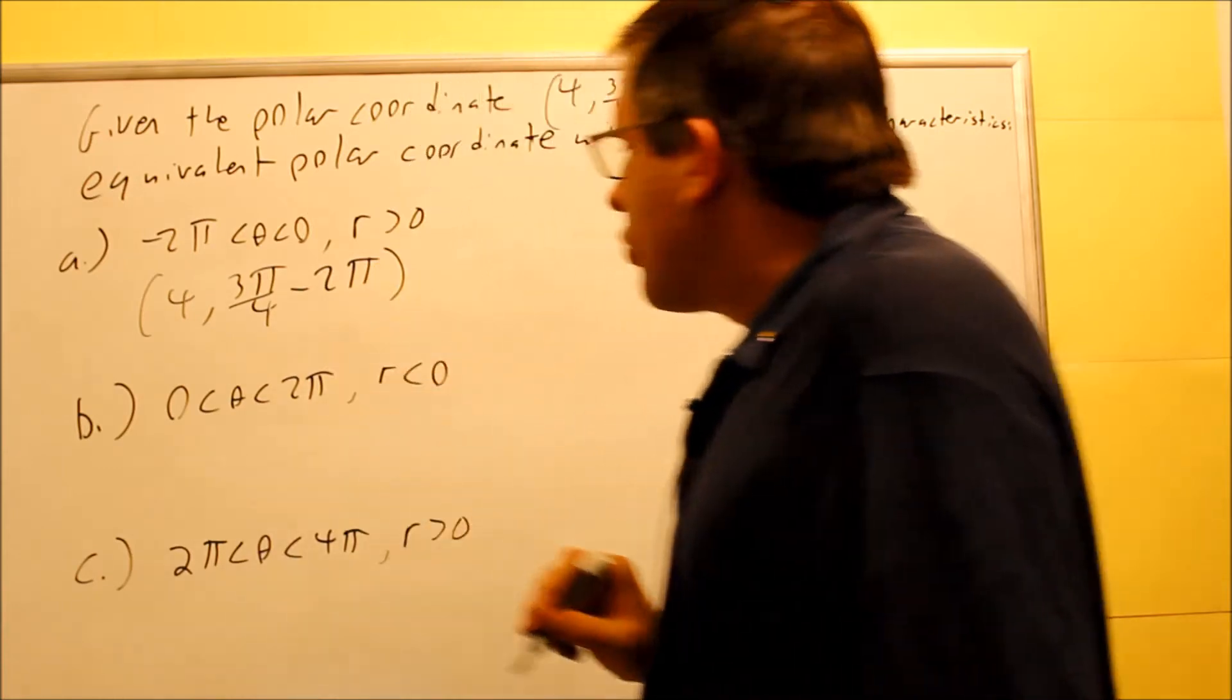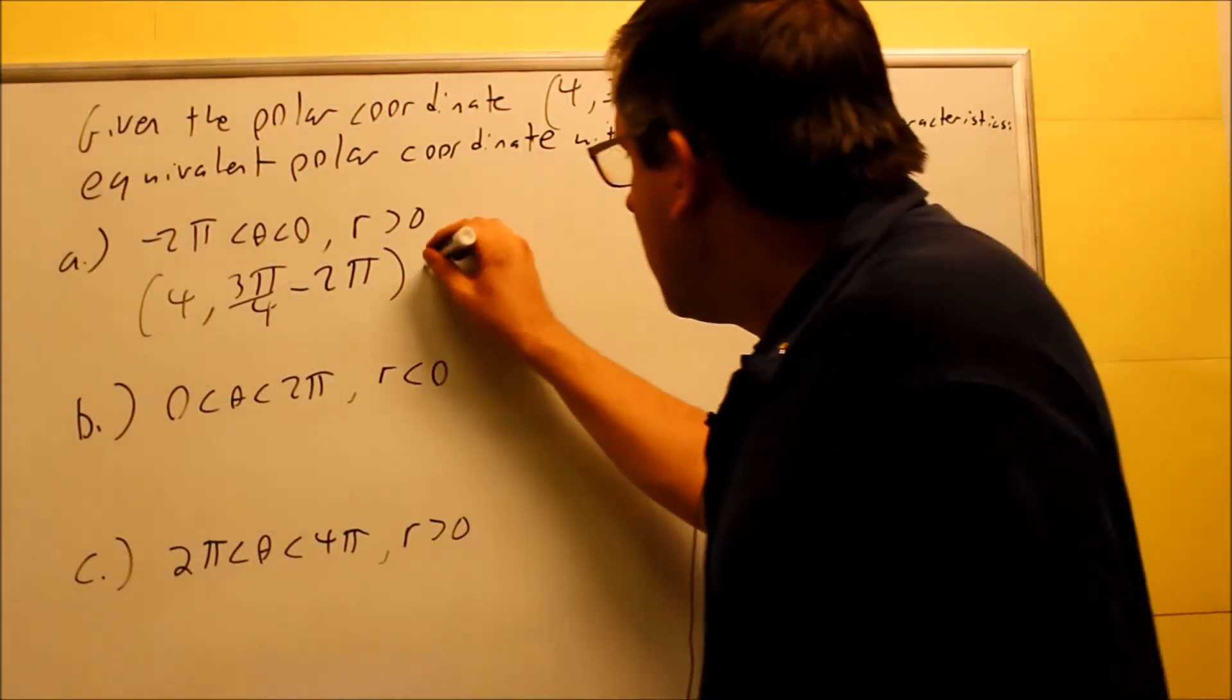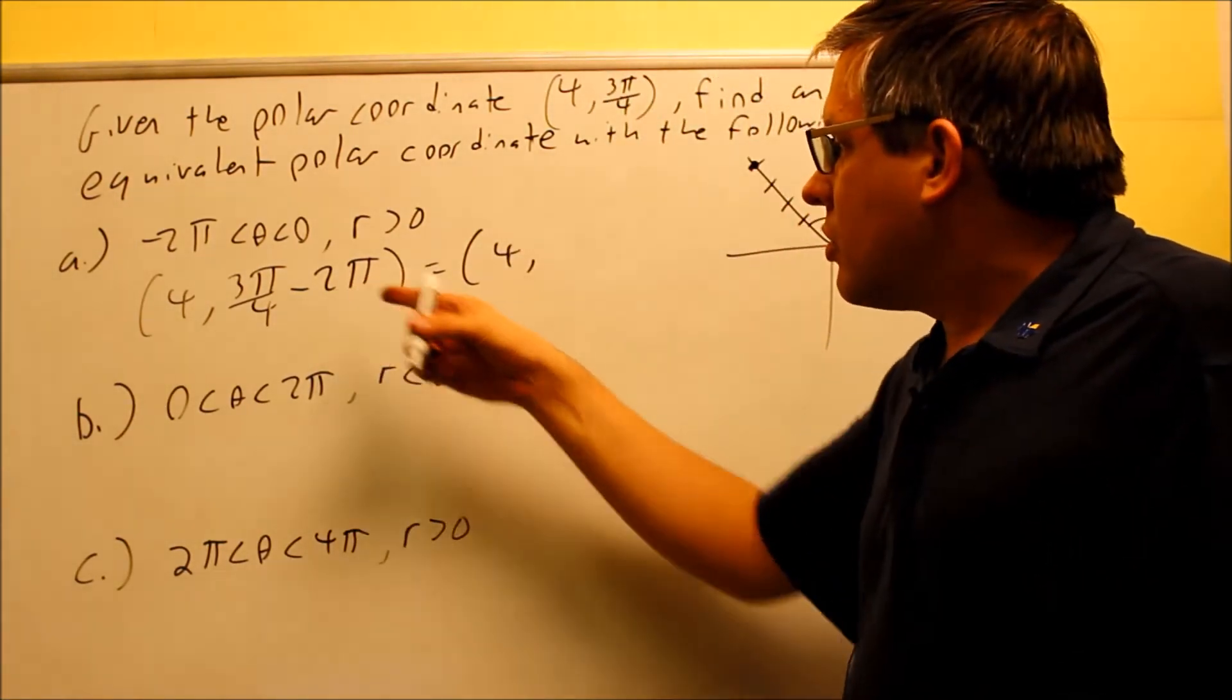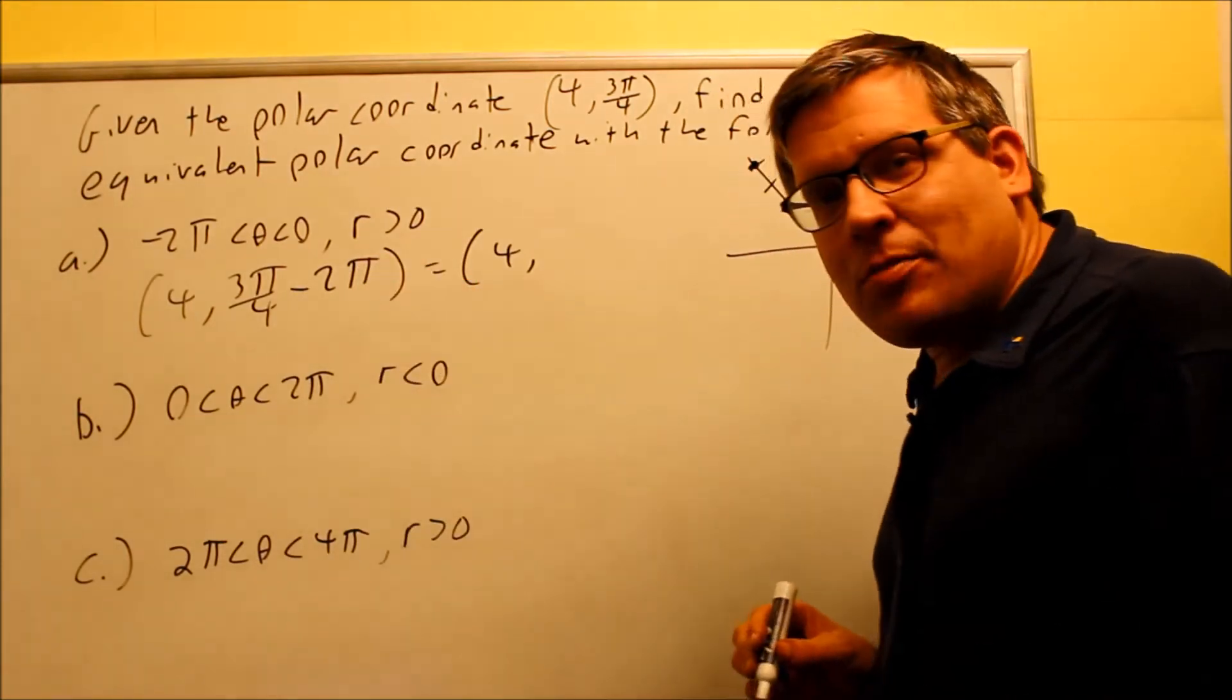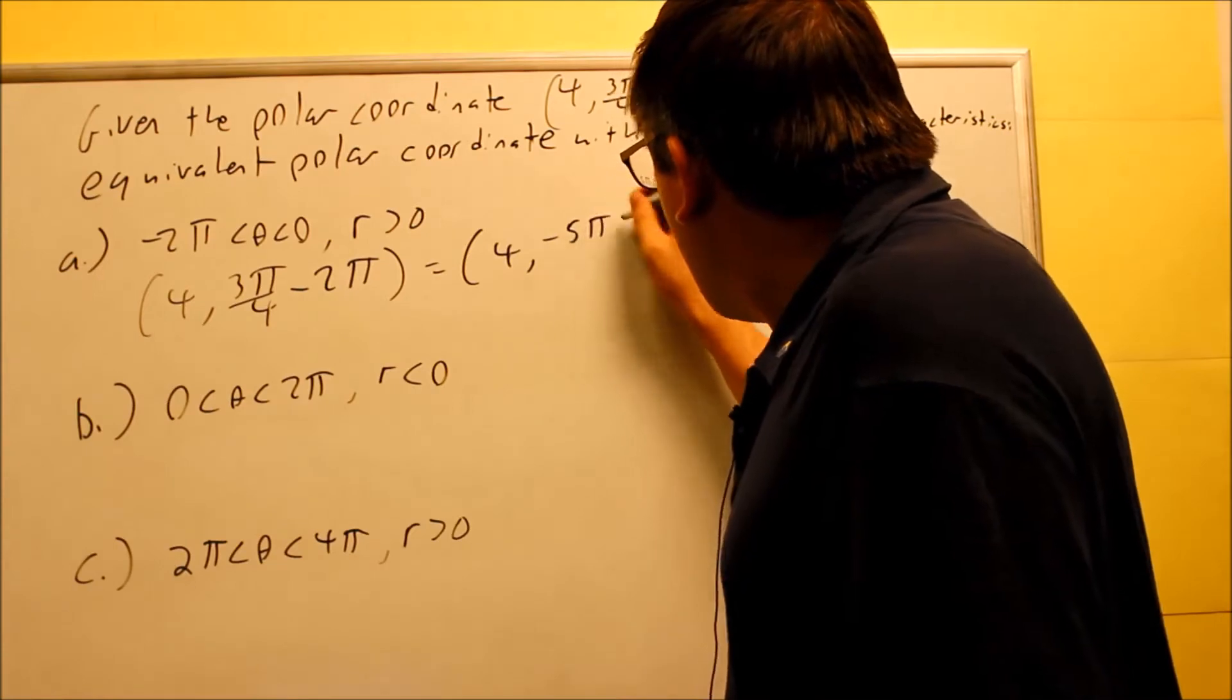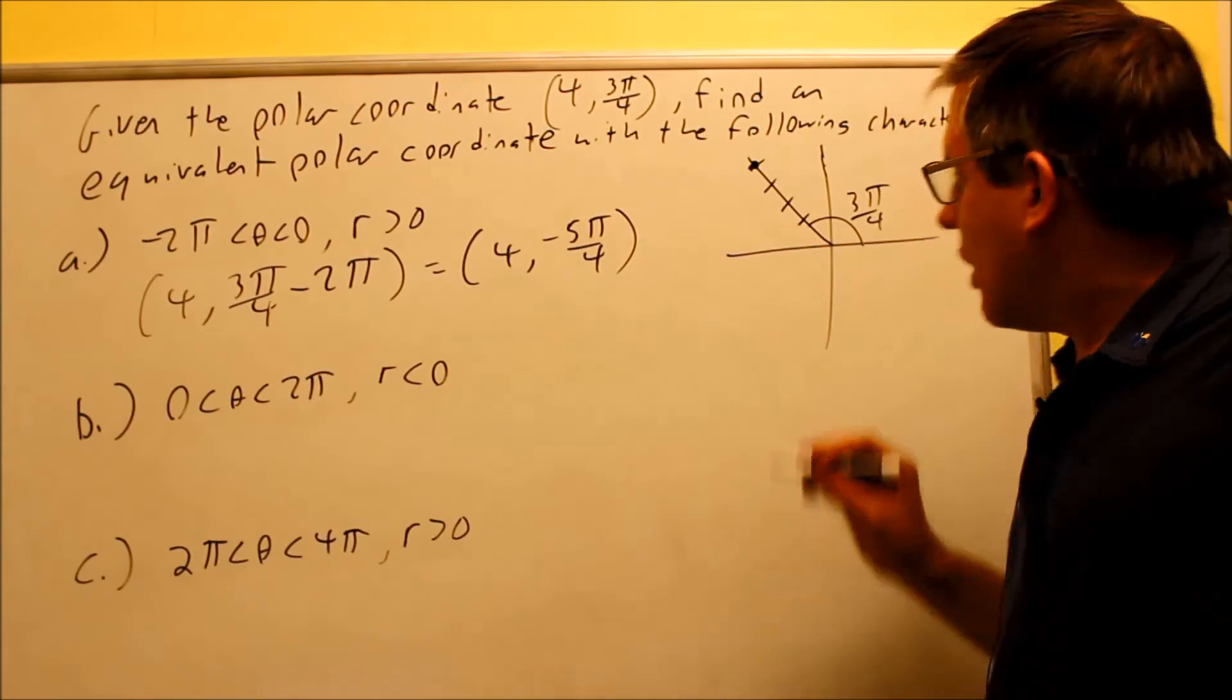I'm subtracting 2π because I want to be sure that I get a negative angle as a result. When I do that, I get 4 comma... if I get common denominators here, multiply that by 4/4, I get 3π minus 8π. That's going to be negative 5π over the common denominator 4. Let's see if this actually makes sense.